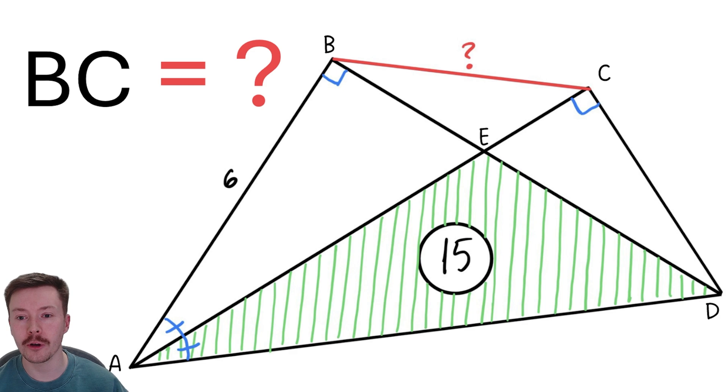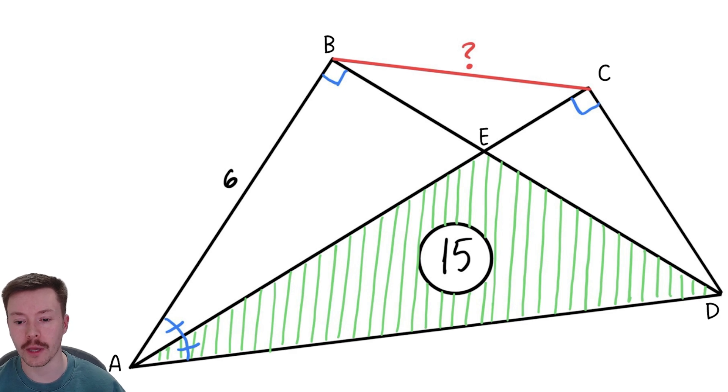Okay, so the first thing that I wanted to do here is to start labeling some angles. So I'm going to call this one theta and this one theta because they have to be the same angle. That means that this angle is then 90 minus theta, and because vertical opposite angles are equal, we have this angle is 90 minus theta as well, which means that this angle CDB is also theta. Now what that means, which we are going to use later on, is that triangles BAE and CED are similar triangles because they've got all the same angles.